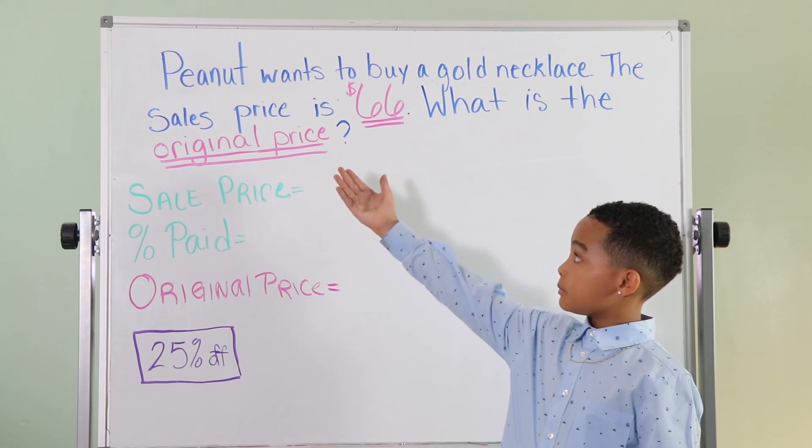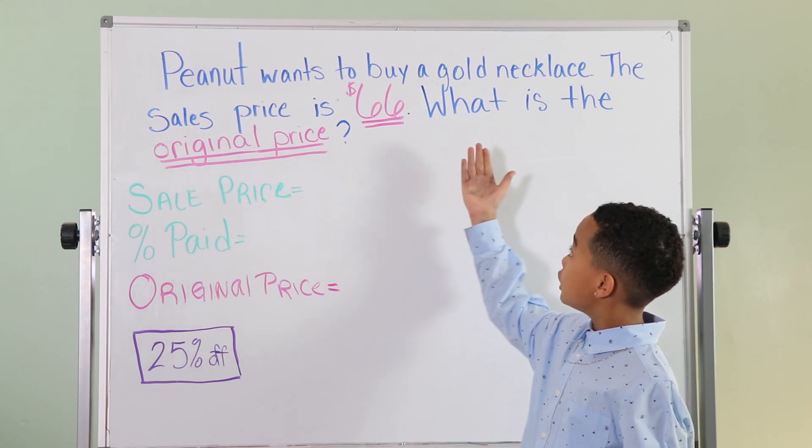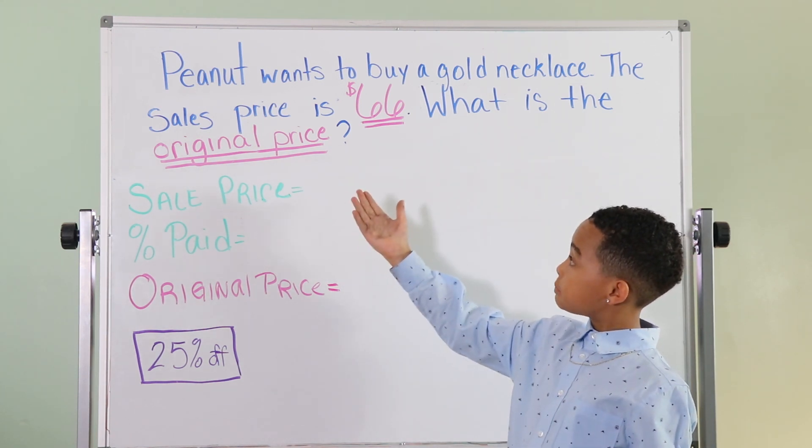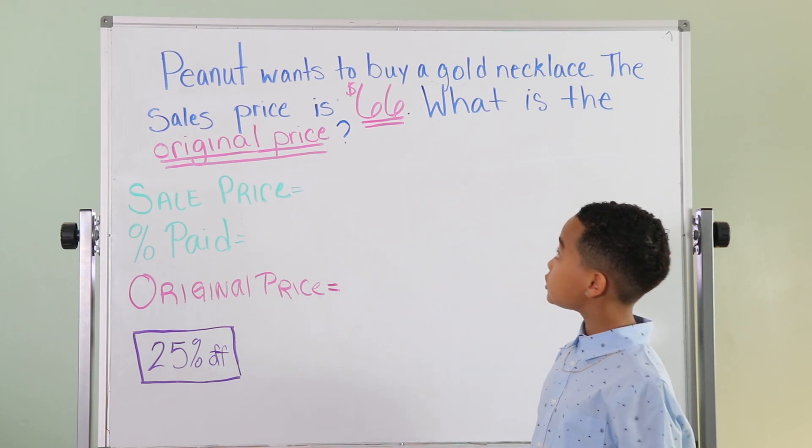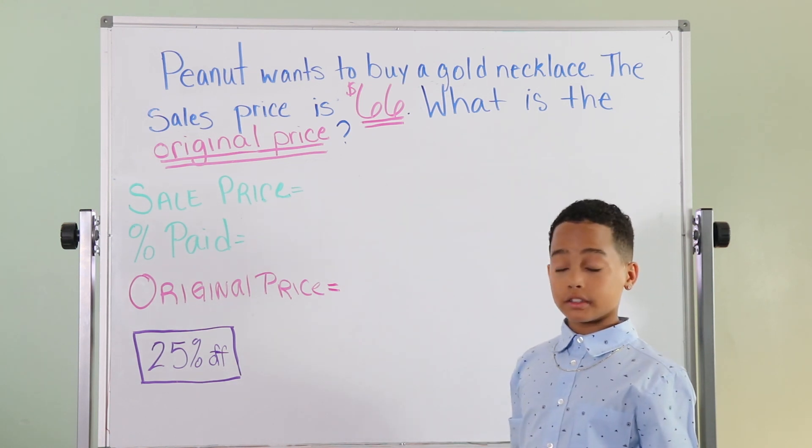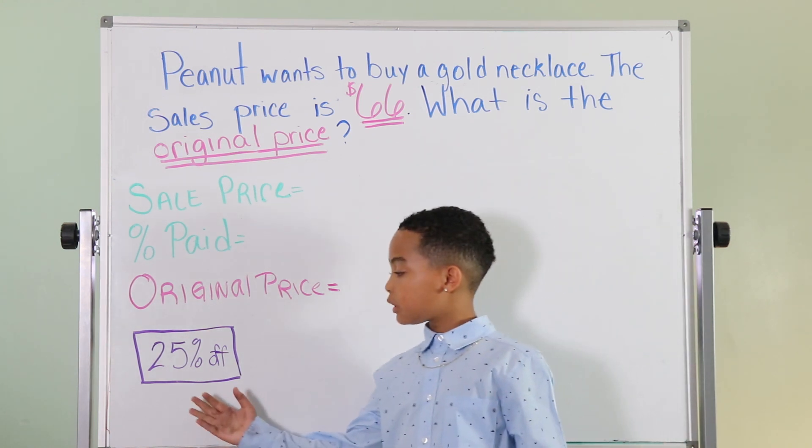So the problem is, Peanut wants to buy a gold necklace. The sales price is $66. What is the original price? We have a coupon for 25% off.